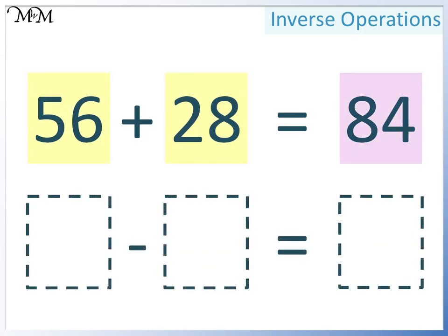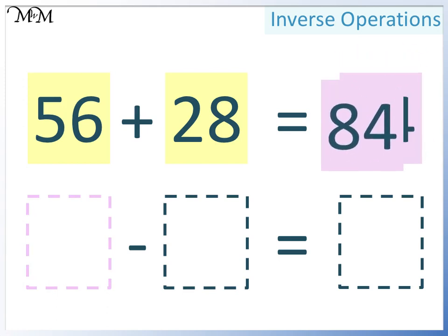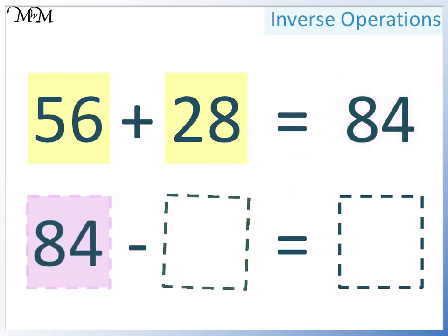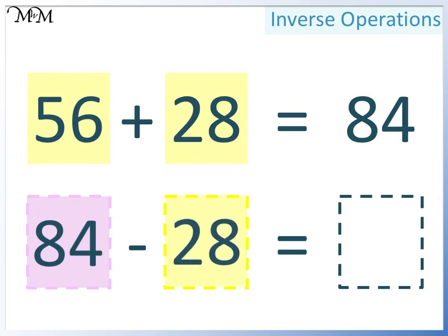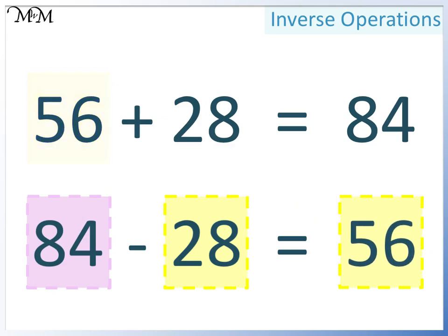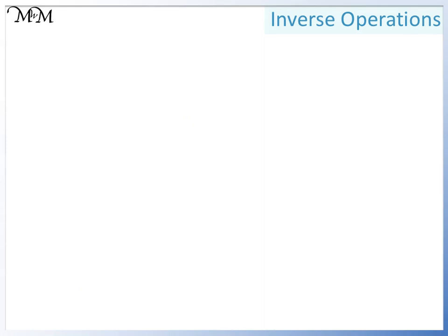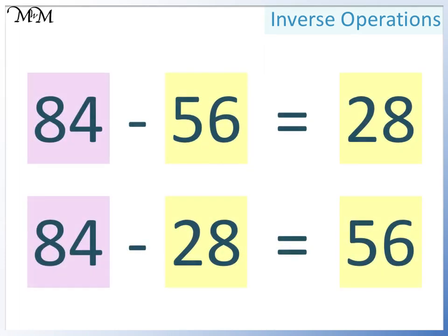We can also write the subtraction in a different order. Again, we must write the largest number in the first space. In the next space we can have either of the two smaller numbers. This time we'll have 28, so in the final space we must have 56. 84 take away 28 equals 56. So we have 84 take away 56 equals 28, and 84 take away 28 equals 56.